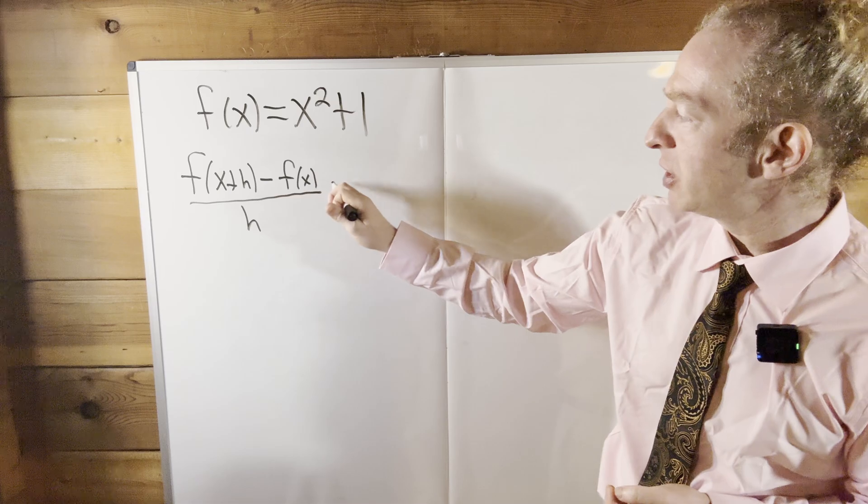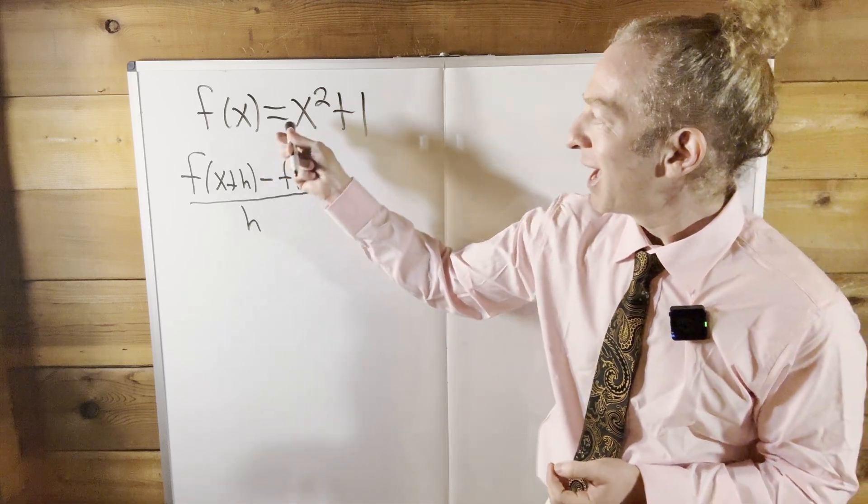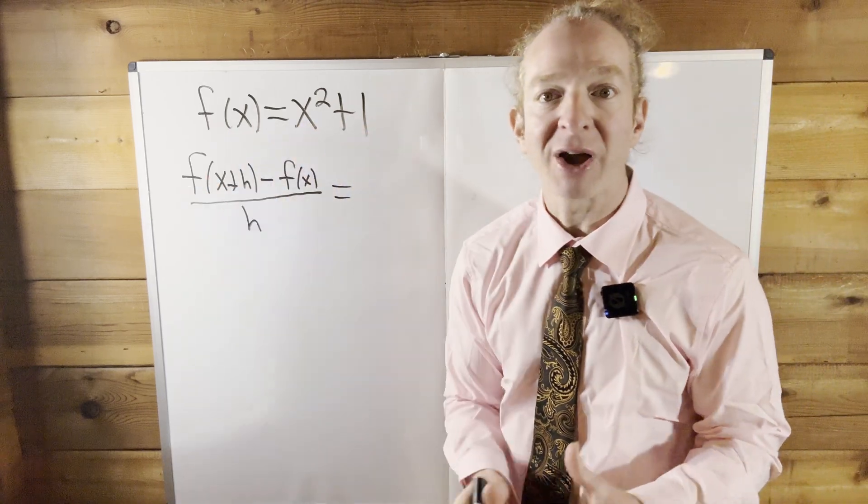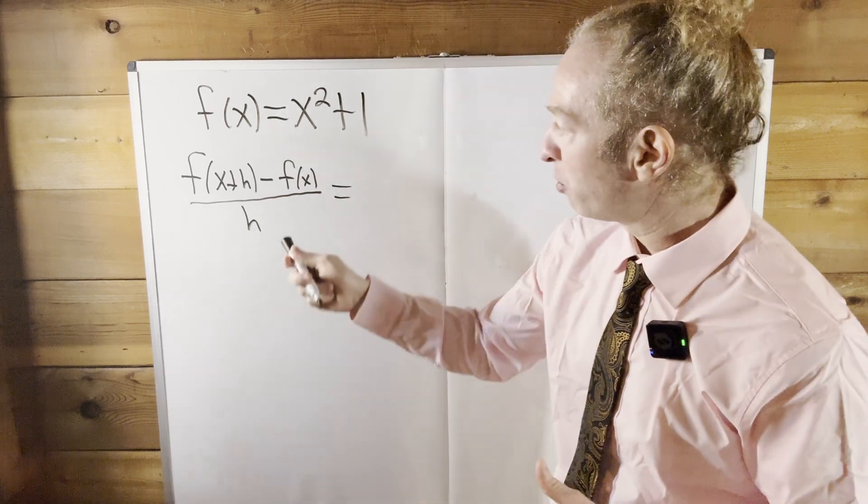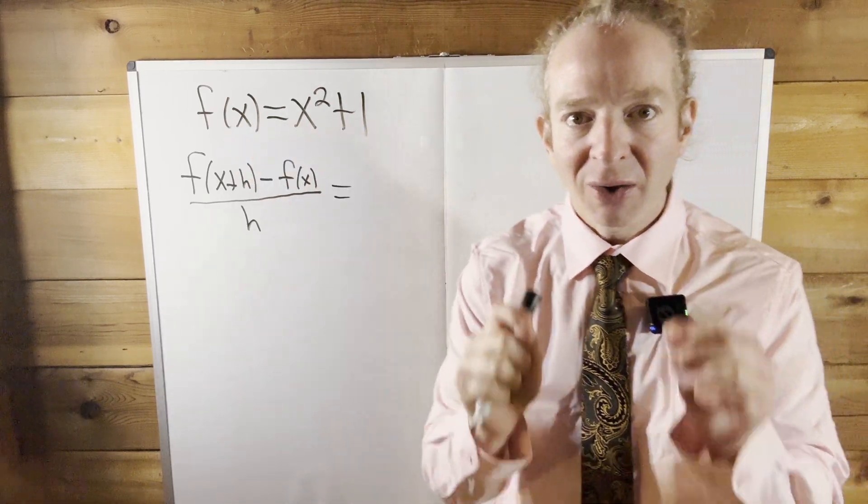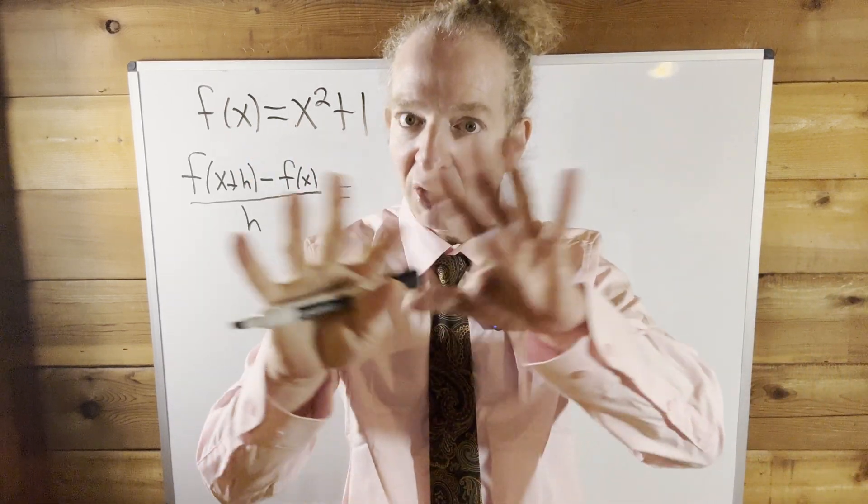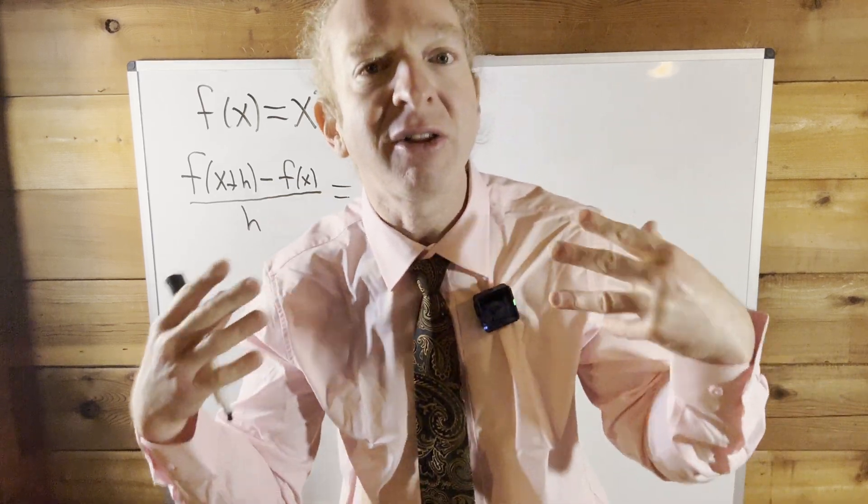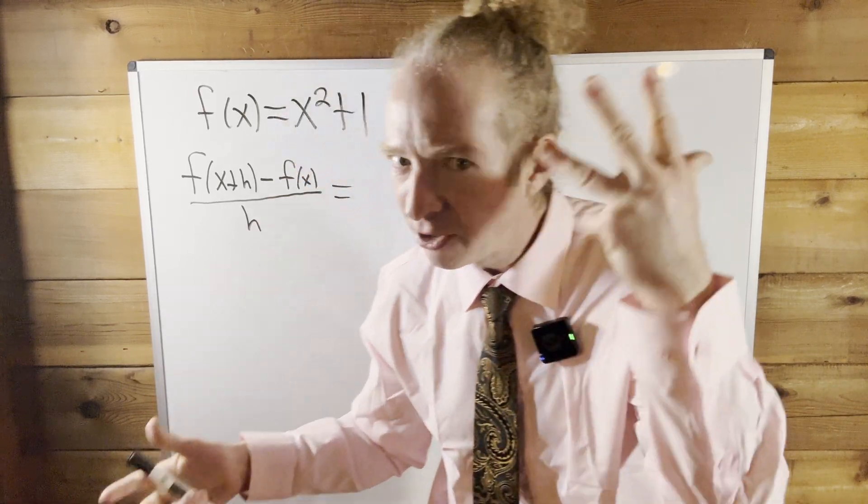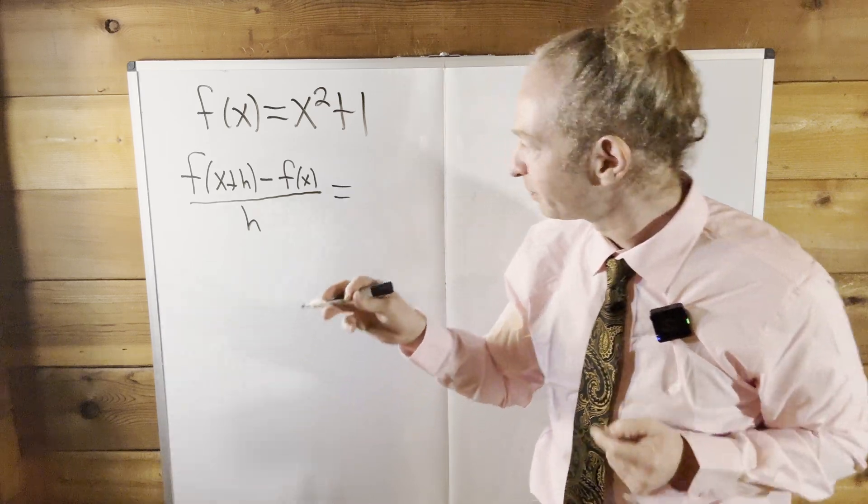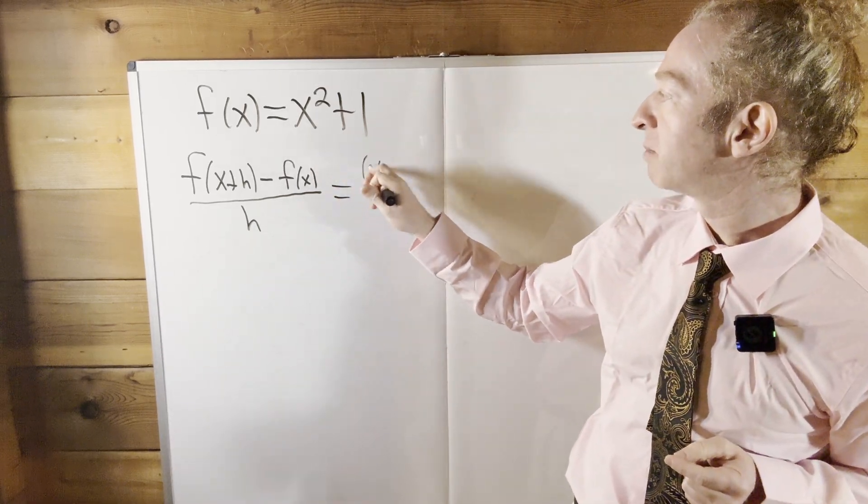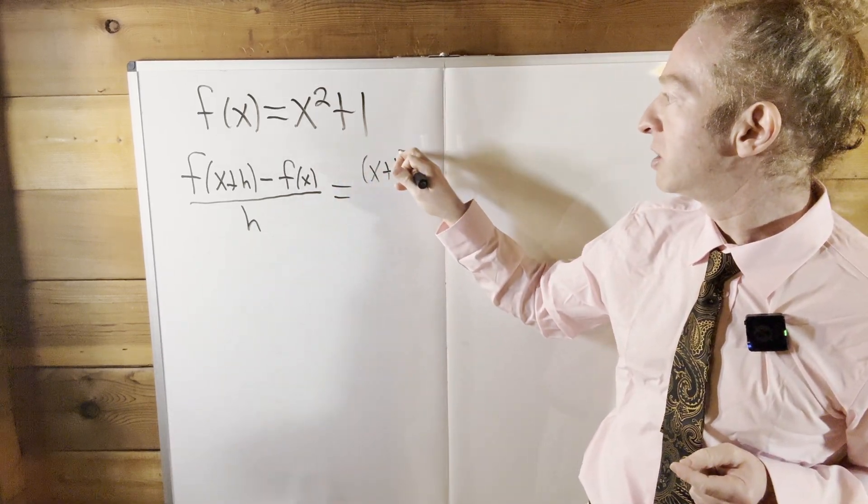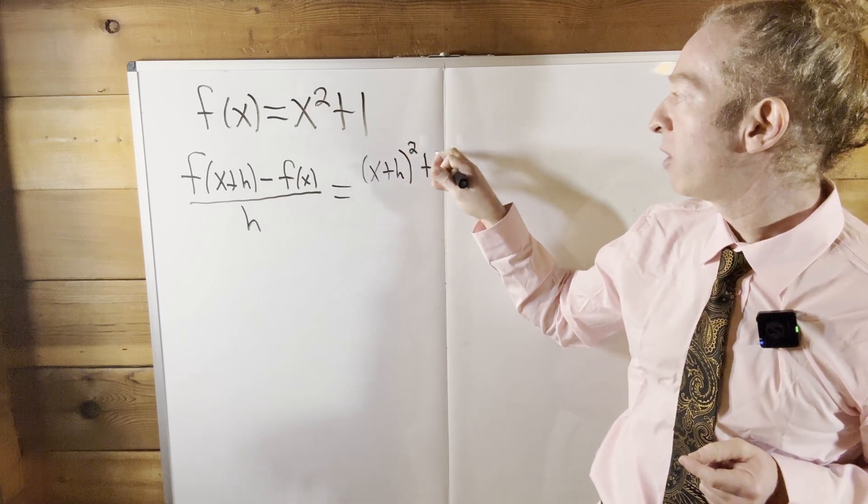So the first thing you do now is plug in x plus h for all the x's. That's how you figure out f(x+h), right? You replace each x with x plus h. That's all you do. Technically speaking, what we are doing is we are evaluating the function at x plus h. But we're just replacing all the x's with x plus h. So this is going to be (x+h) squared plus the number one.